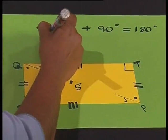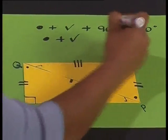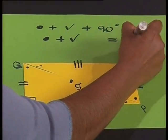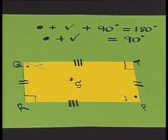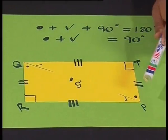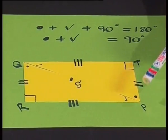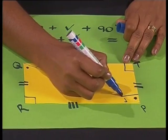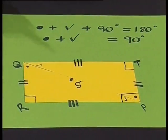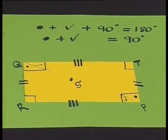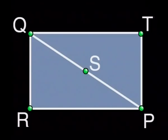So the dot plus the tick equals 90 degrees. Let's write it all down: dot plus tick plus 90 degrees equals 180 degrees, which means dot plus tick equals 90 degrees. At angle P we have the dot plus the tick, so angle P is 90 degrees. And at angle Q we also have a dot plus the tick, so angle Q is also 90 degrees. This shape is definitely a rectangle.